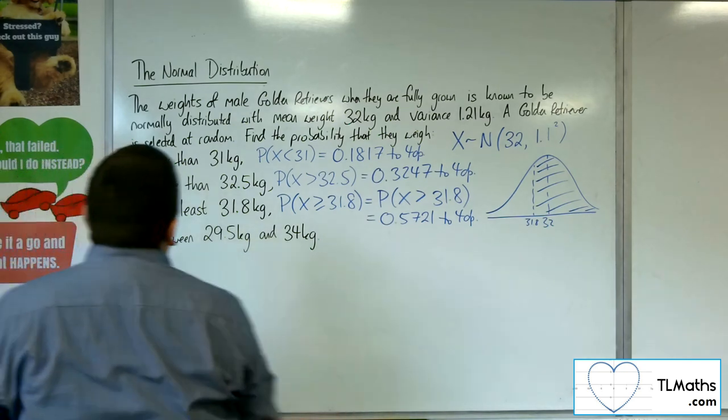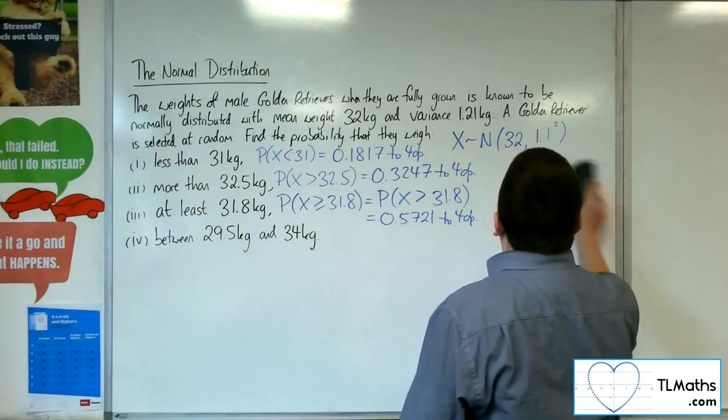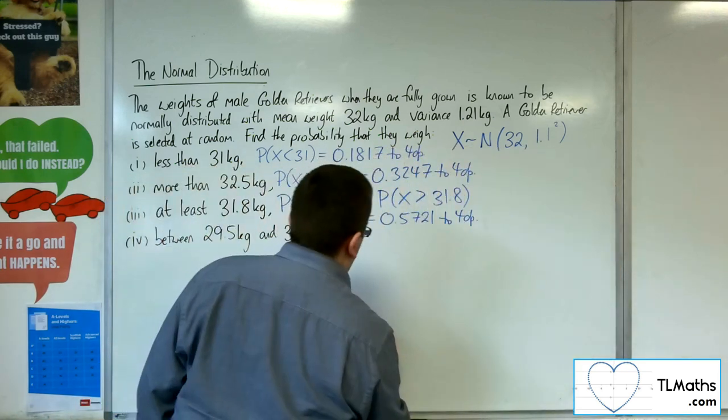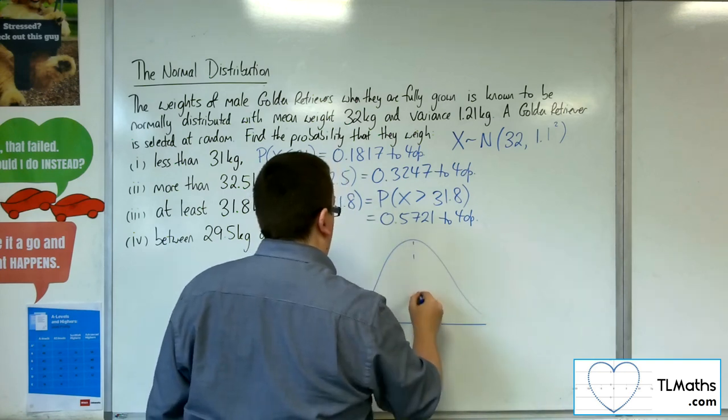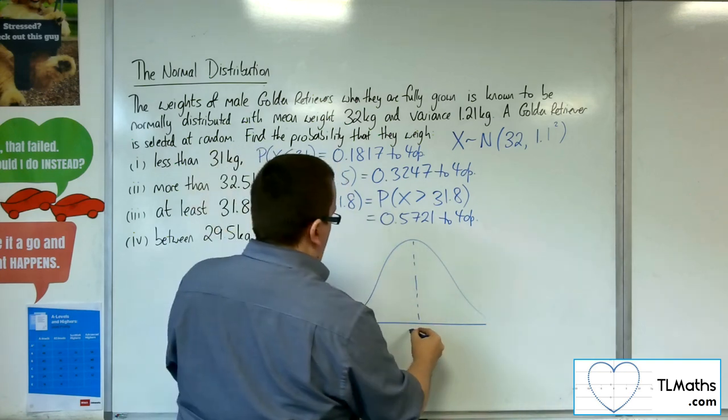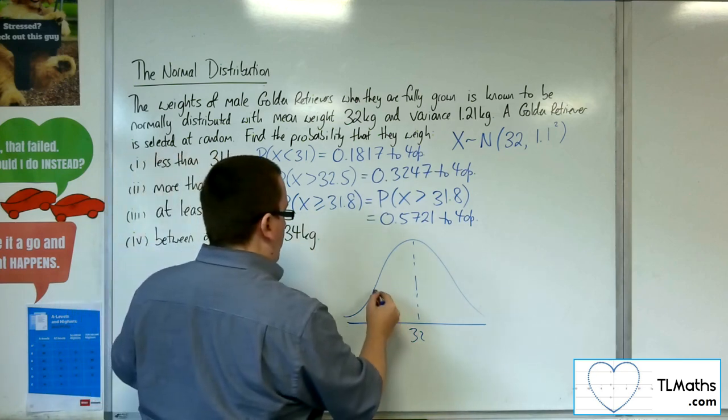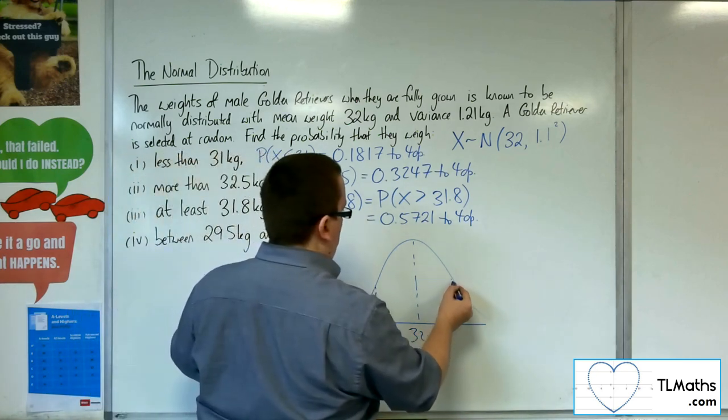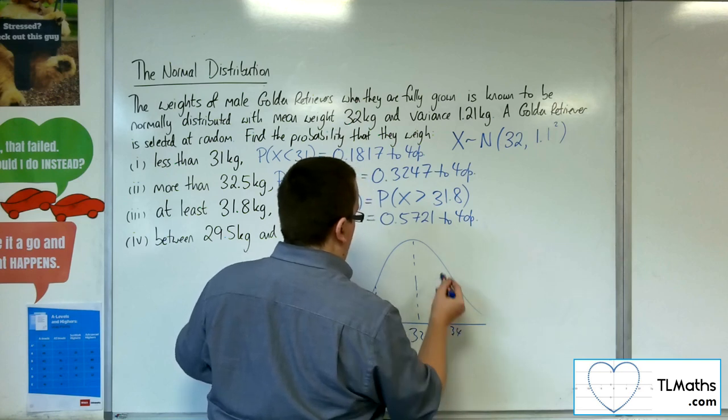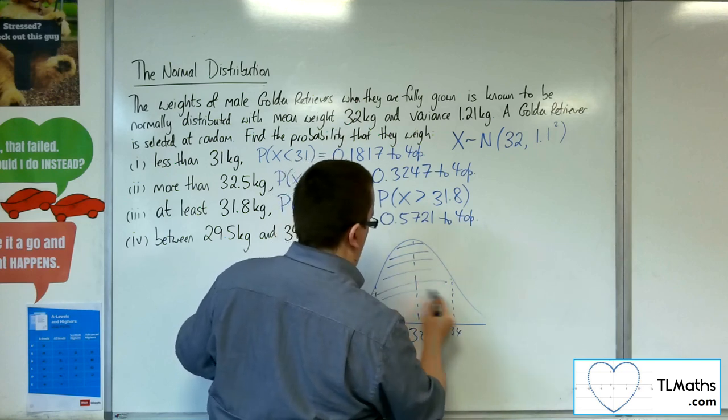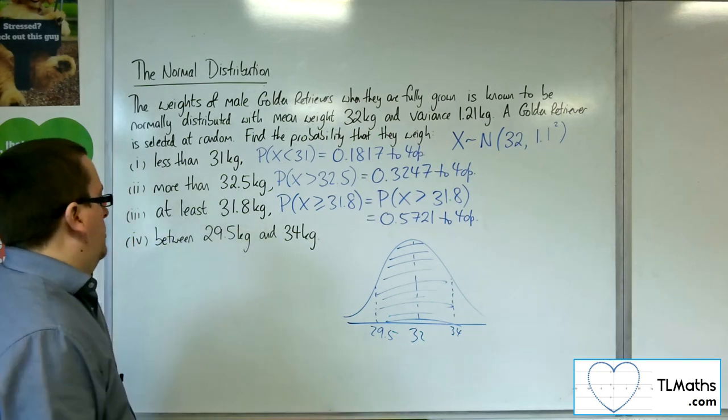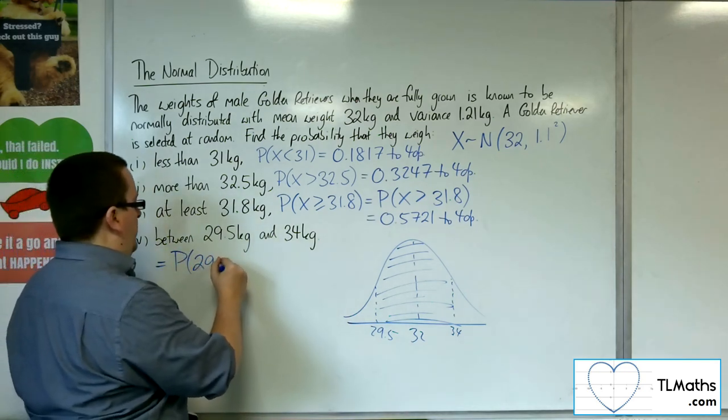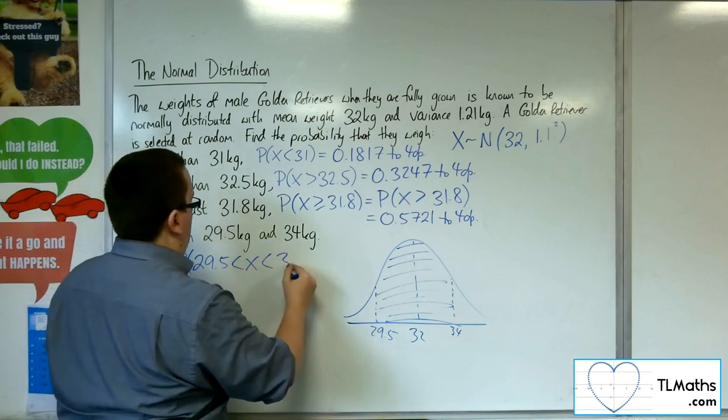Last one. So between 29.5 and 34 kilos. So, diagram. There's 32, 29.5 and 34. So it's probably going to be quite proportionate. So this is the same as finding the property of X being between the 29.5 and the 34.